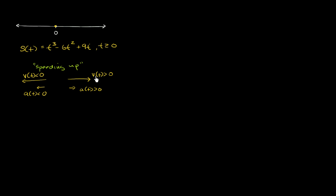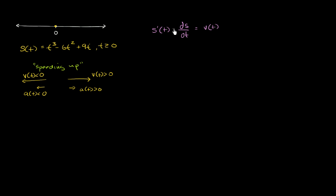So let's think about these two scenarios. Since velocity matters so much here, let's remind ourselves that velocity — a derivative is just the rate of change with respect to a variable. If you have your position function, the derivative of position with respect to time is the instantaneous rate of change of position with respect to time, which is just our velocity function v of t. We can also write that as s prime of t, or ds/dt, equals velocity as a function of time. Taking the derivative, our velocity as a function of time equals 3t squared minus 12t plus 9.